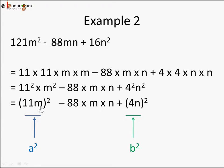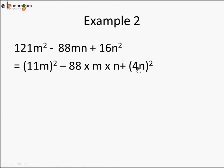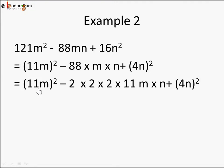Here a is 11m — the entire thing — and b is 4n. So a square is 11m whole square and b square is 4n whole square. Now let's verify the middle term is 2ab. We write 88 as 2 into 2 into 2 into 11, so 2 into 2 is 4, 4 into 2 is 8, 8 into 11 is 88. So 88mn equals 2 into 2 into 2 into 11 into m into n.